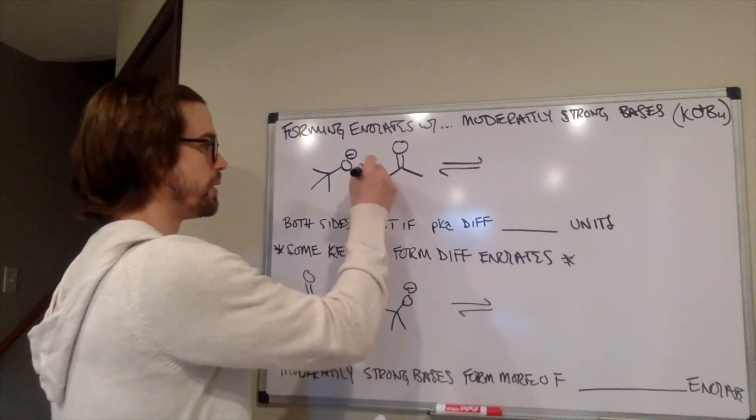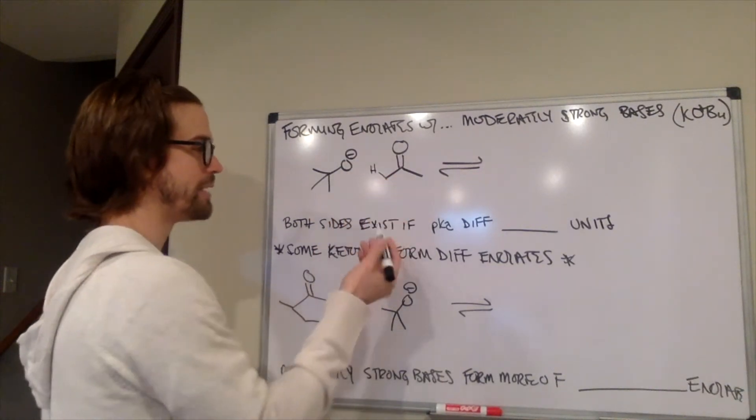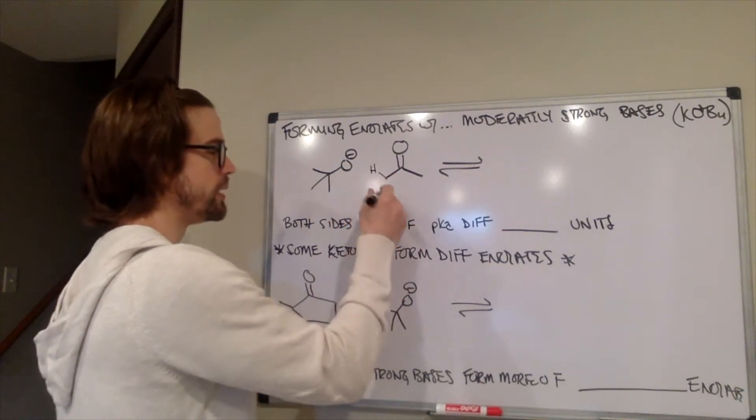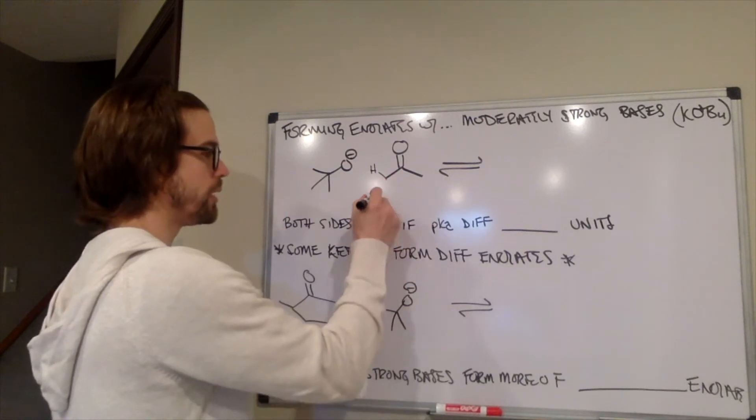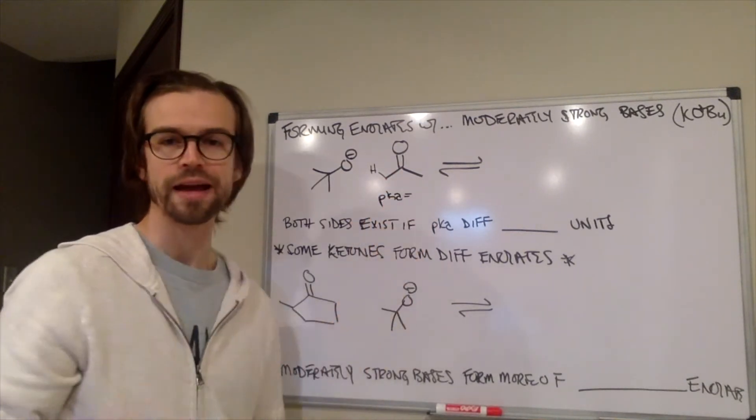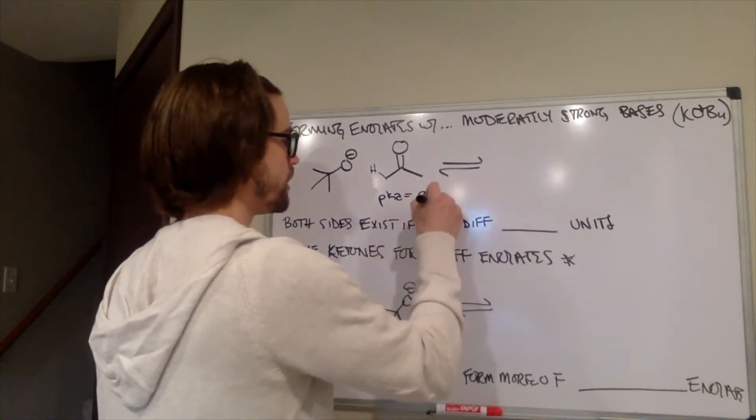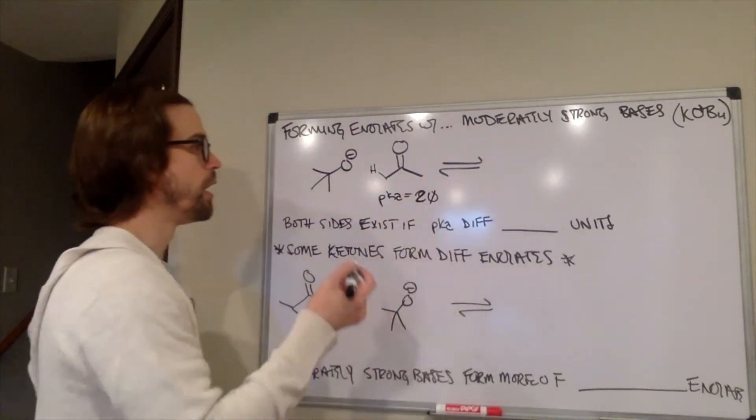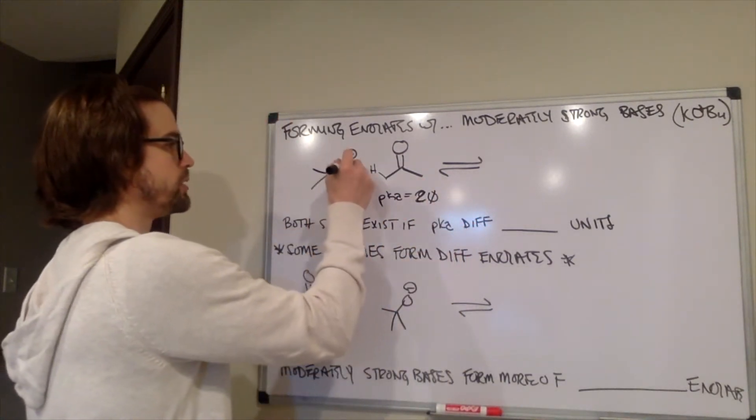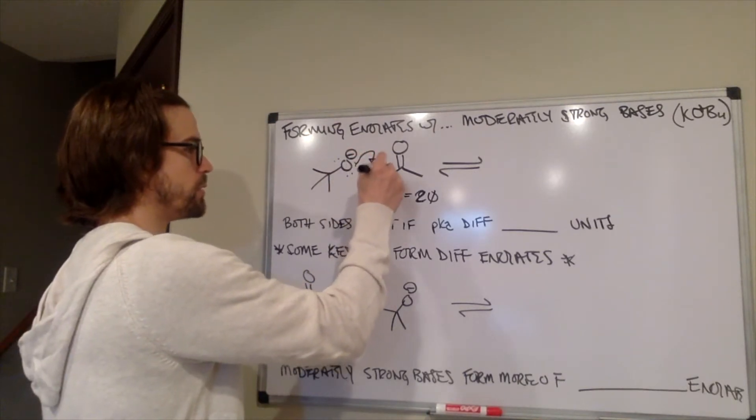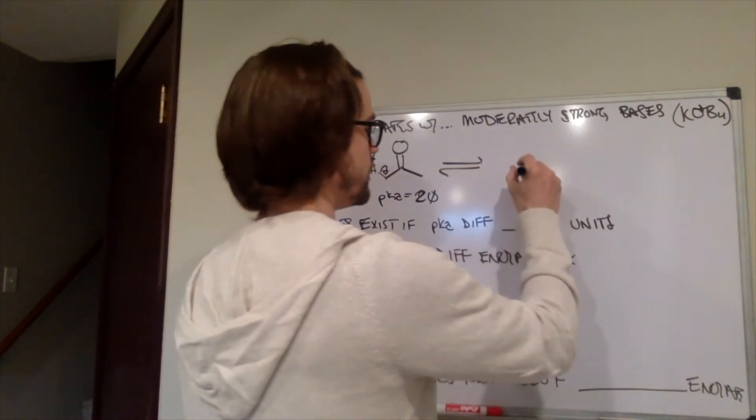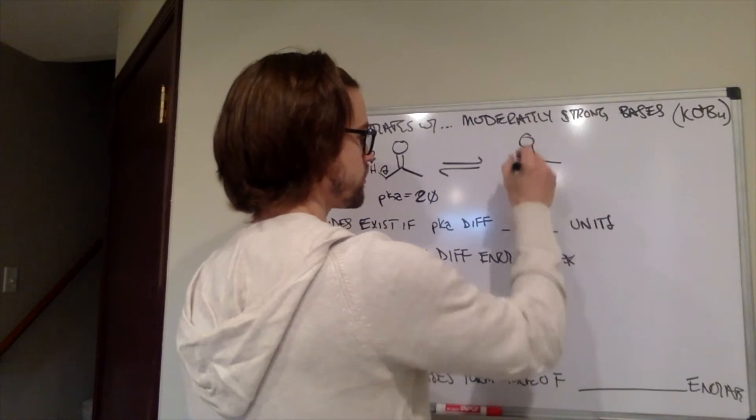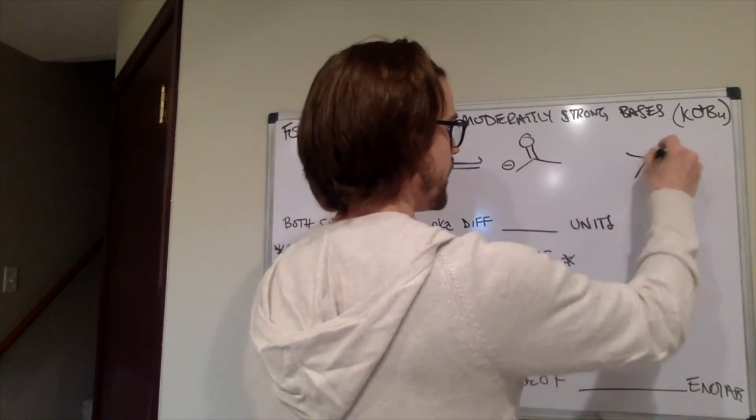Well, again, the acidic proton of acetone or some type of ketone is going to be the alpha position to the carbonyl, and if it's a ketone or aldehyde, it's going to be around 20. So we'll just say 20 is the pKa there, and that moderately strong base is going to pull off that proton, and form the enolate, and the conjugate acid of that base.